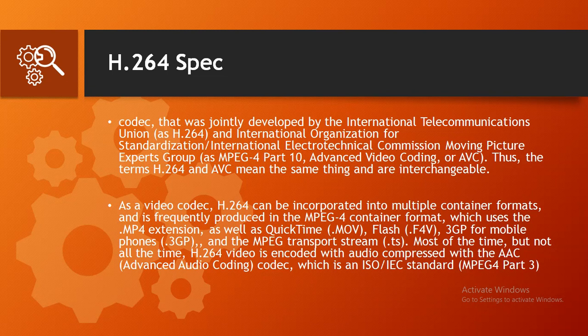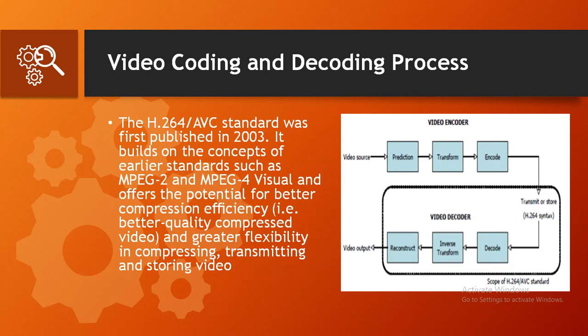A codec is basically a coding format for encoding or decoding audio and video. The H.264/AVC standard was first published in 2003. It builds on the concepts of earlier standards such as MPEG-2 and MPEG-4 Visual, and offers the potential for better compression efficiency — that is, better quality compressed video — and greater flexibility in compressing, transmitting, and storing video.